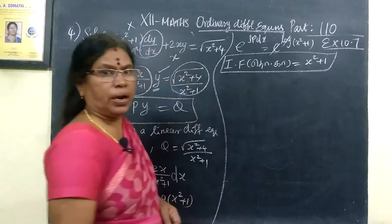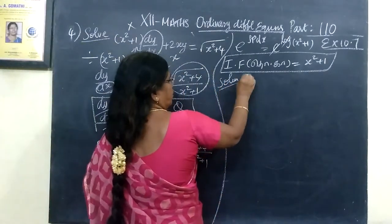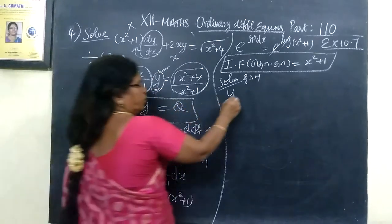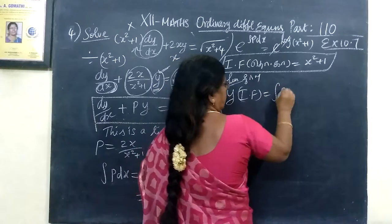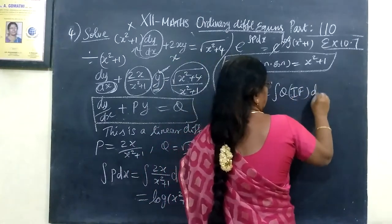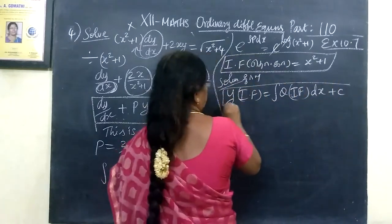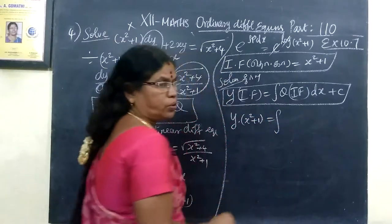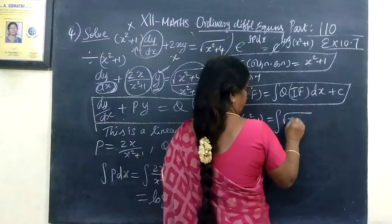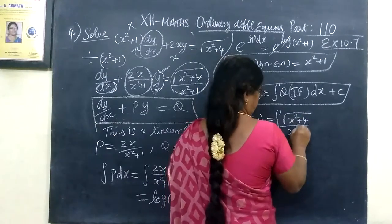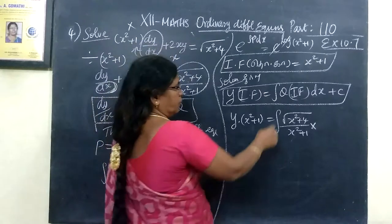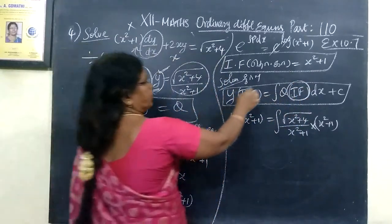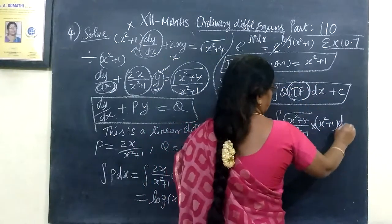So the solution is: y times the integrating factor equals integral of Q times the integrating factor dx plus C. So y times x squared plus 1 equals the integral of root of x squared plus 4 by x squared plus 1, times x squared plus 1, dx plus C.